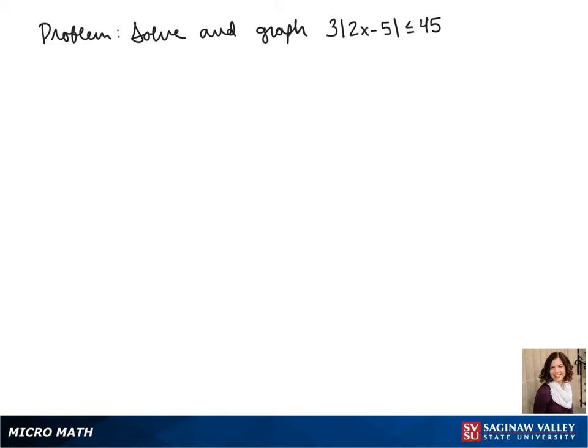Welcome to another day of algebra. Today we'll be solving and graphing the inequality 3 times the absolute value of 2x minus 5 is less than or equal to 45.